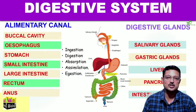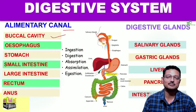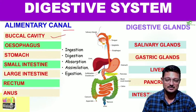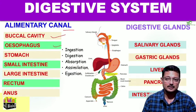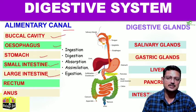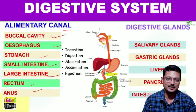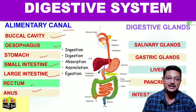Let us have a look at the major components. As far as the alimentary canal is concerned, the buccal cavity or oral cavity contains tongue, teeth, and also inputs from various salivary glands. Then comes the esophagus, stomach, small intestine, large intestine, rectum, and anus. This is a tube. And you have to study all the processes: ingestion, digestion, absorption, assimilation, and egestion.